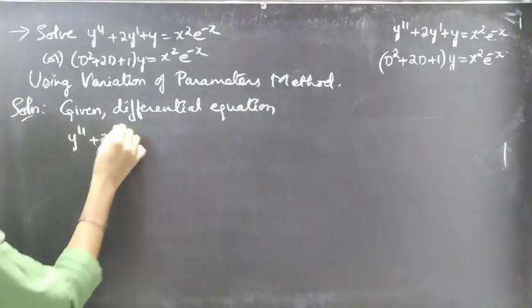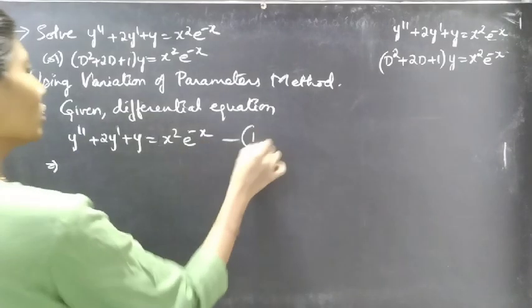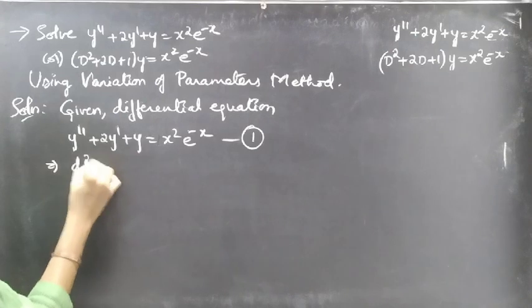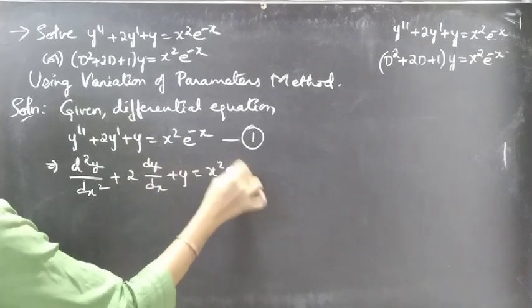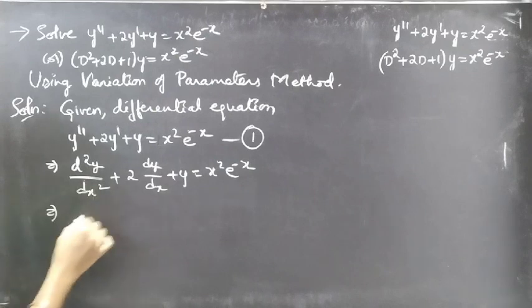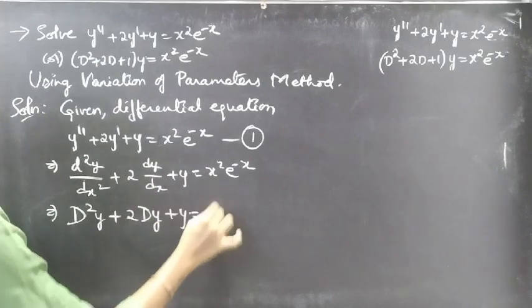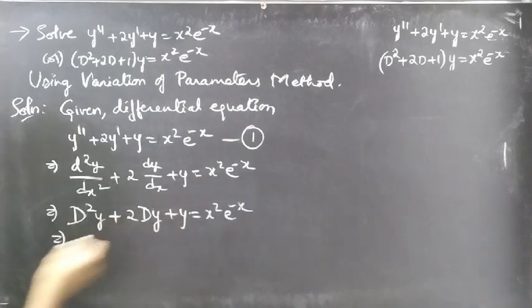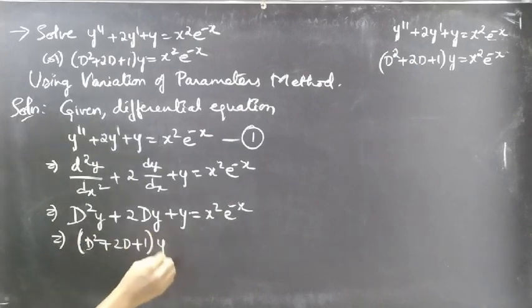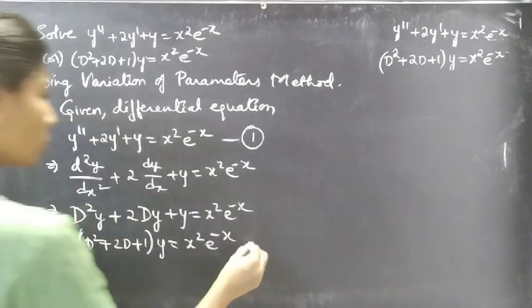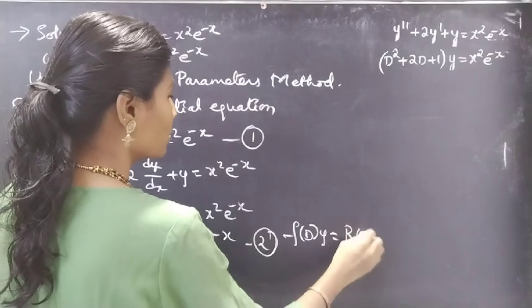Starting with y'' + 2y' + y = x²e^(-x), we write y'' as D²y/dx², and y' as dy/dx, giving D²y/dx² + 2·dy/dx + y = x²e^(-x). Writing D²y + 2Dy + y = x²e^(-x), and taking y common: (D² + 2D + 1)y = x²e^(-x). Consider this equation 2, which is in operator form f(D)·y = R(x), where f(D) = D² + 2D + 1 and R(x) = x²e^(-x).